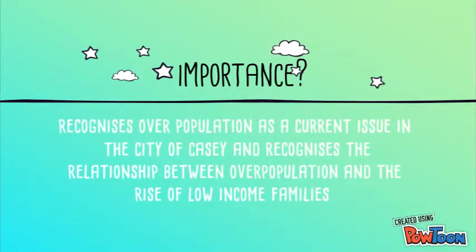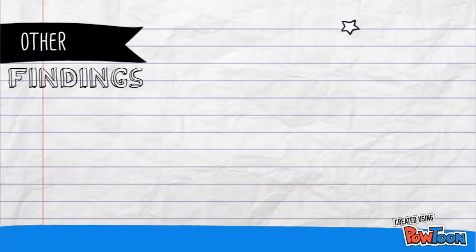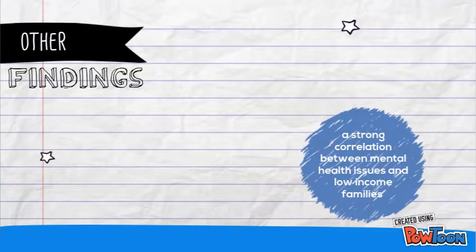It recognizes overpopulation as a current issue in the city of Casey and it recognizes the relationship between overpopulation and the rise of low-income families. It also recognizes that this issue is not only a small community issue, but it was a wider social issue.